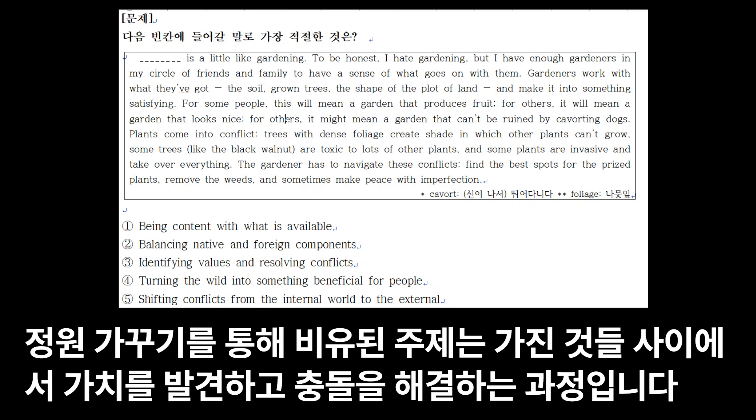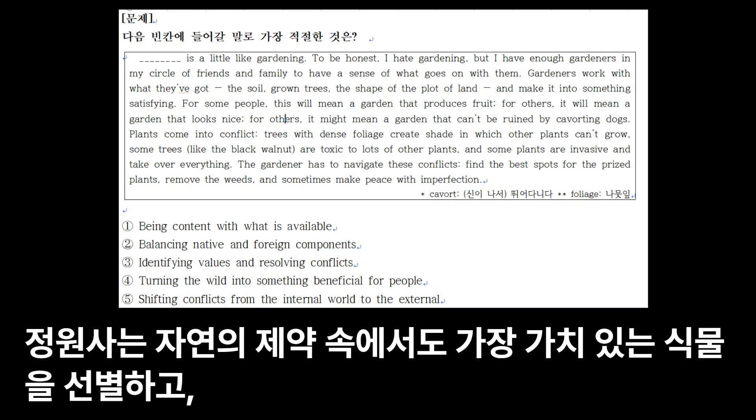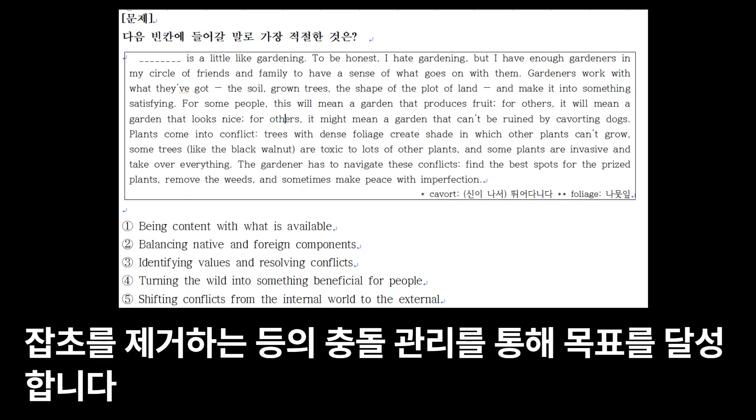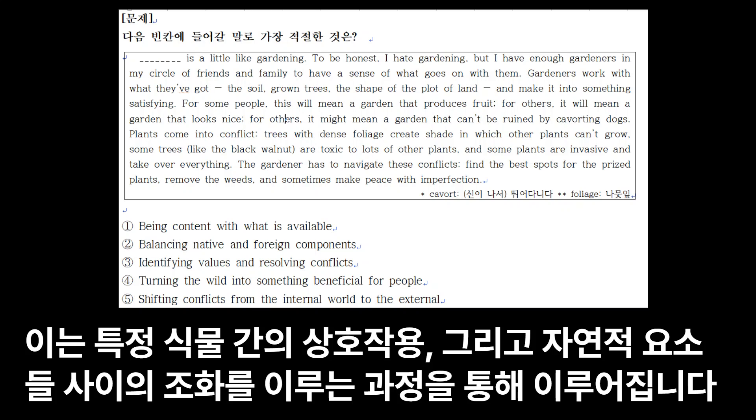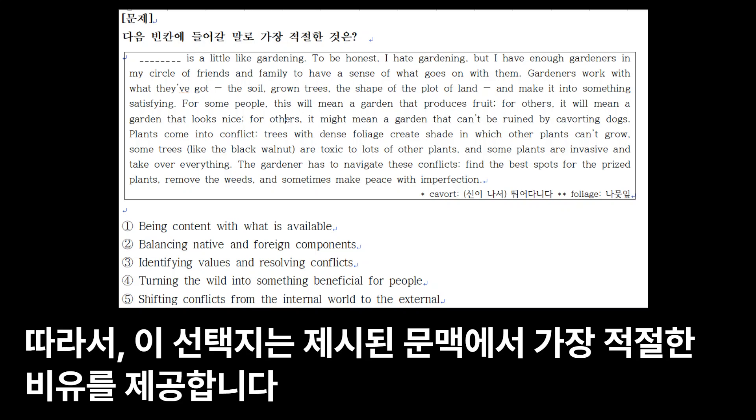정원 가꾸기를 통해 비유된 주제인, 같은 것들 사이에서 가치를 발견하고 충돌을 해결하는 과정입니다. 정원사는 자연의 제약 속에서도 가장 가치 있는 식물을 선별하고, 잡초를 제거하는 등의 충돌 관리를 통해 목표를 달성합니다. 이는 특정 식물 간의 상호작용 그리고 자연적 요소들 사이의 조화를 이루는 과정을 통해 이루어집니다. 따라서 이 선택지는 제시된 문맥에서 가장 적절한 비유를 제공합니다.